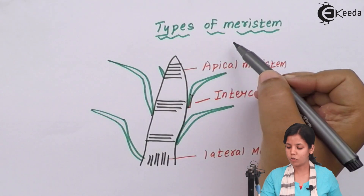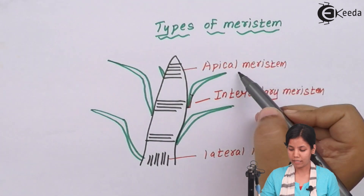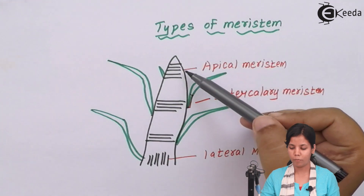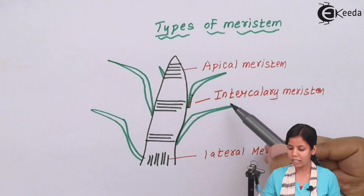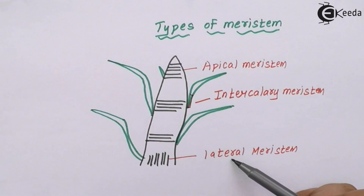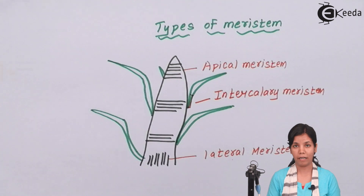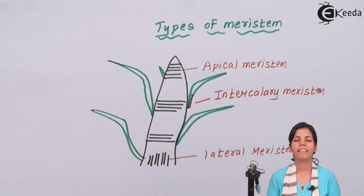This is the structure of the types of meristem. The three types present in plants are: apical meristem, present at the top or apex; intercalary meristem, present in between the apical and lateral meristem; and lateral meristem, present at the basal side. I hope you have all understood the various types of meristematic tissue, how they function, and where they are found. Thank you.